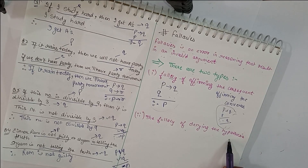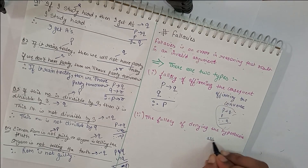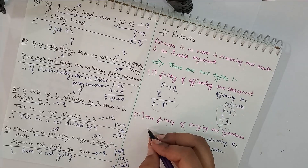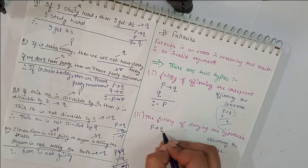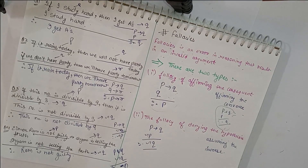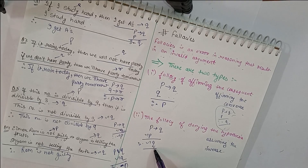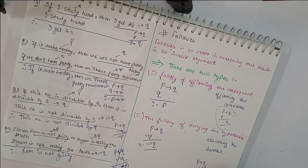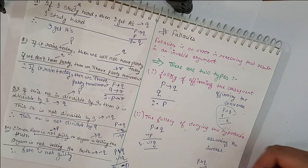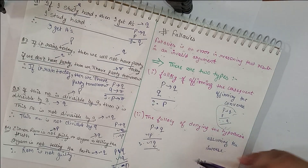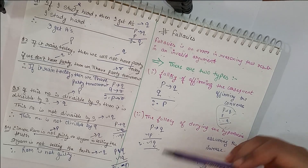The second fallacy is called the Fallacy of Denying the Hypothesis, also known as assuming the inverse. It says: P implies Q, and negation of P, concludes negation of Q. This looks similar to Modus Tollens — which says P implies Q and negation of Q concludes negation of P — but this is also a fallacy, an error. You must remember both types.